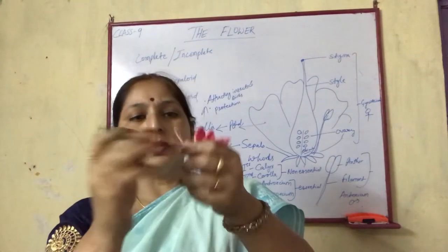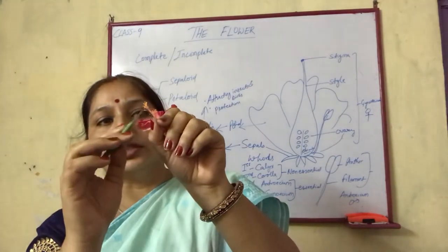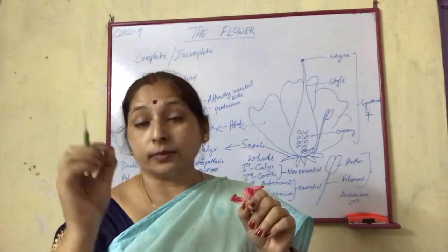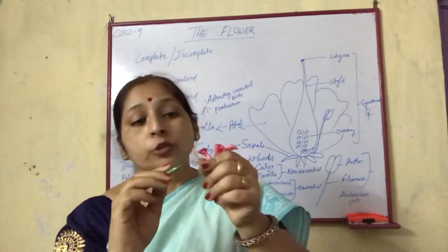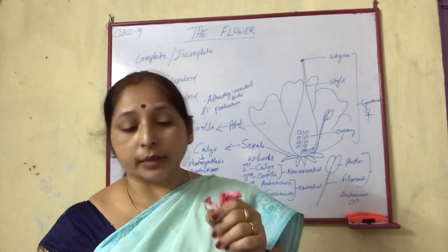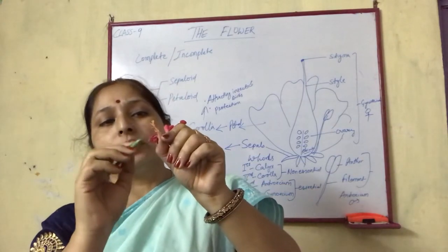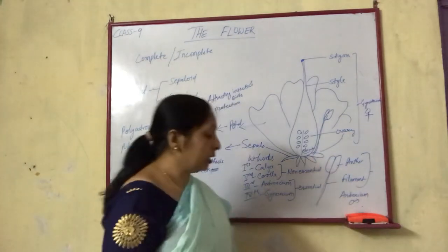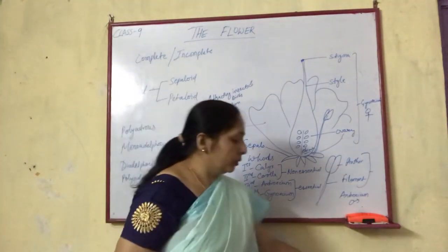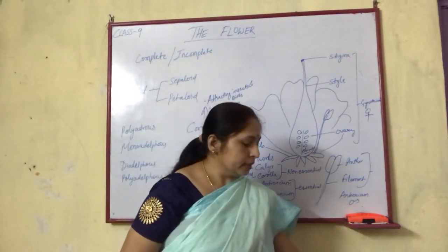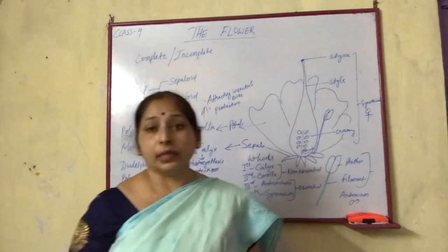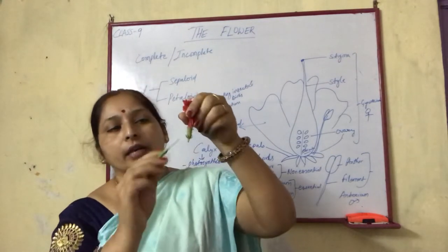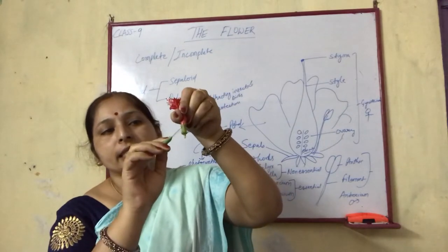In the androecium of the hibiscus flower, you can see the yellow colored structures arranged on small fine filaments. These yellow structures are termed as anthers, and the structures they are attached to are the filaments. Together these form the androecium.